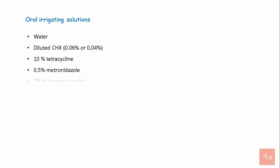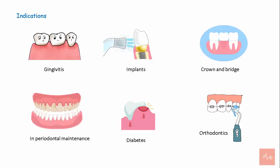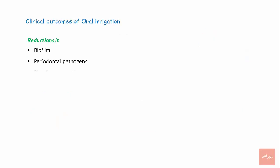Solutions used for oral irrigators include water, diluted chlorhexidine, 10% tetracycline, 0.5% metronidazole, or 3% hydrogen peroxide. Oral irrigation can be indicated in gingivitis, implants, crown and bridge, orthodontics, diabetic patients, and in periodontal maintenance. Clinical outcomes of oral irrigation include reduction of biofilm, periodontal pathogens, bleeding on probing, probing depth, and gingivitis.